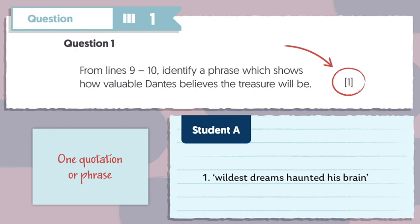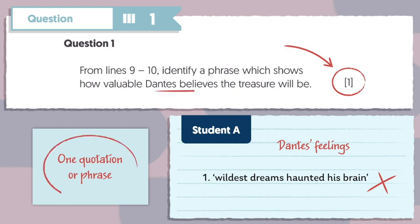Let's take a look at Student A's response to this question. This student hasn't managed to achieve the mark because they've focused more on Dantes' feelings with their response of 'wildest dreams haunted his brain.' They haven't chosen a quotation that links to the question, which is asking what Dantes believes about the treasure. Remember, when you're selecting a quotation to use, it's really important that it fully answers the question.